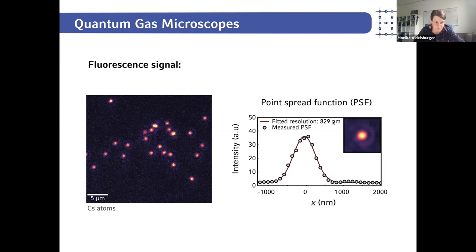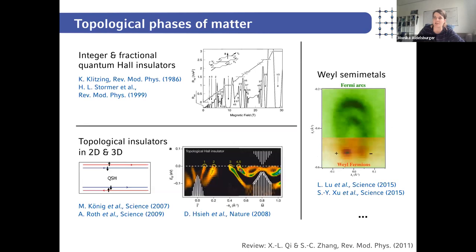Why are we interested in using periodic driving or Floquet engineering? One main motivation is that these techniques allow us to engineer topological phases of matter. I'll use the example of laser-assisted tunneling and periodic driving to introduce how we realize such topological phases, focusing on integer and fractional quantum Hall insulators.